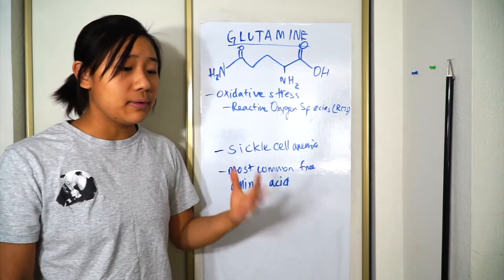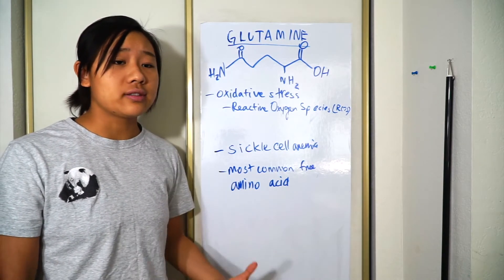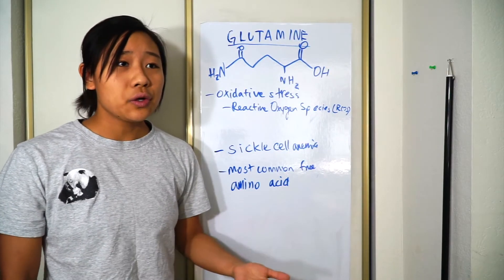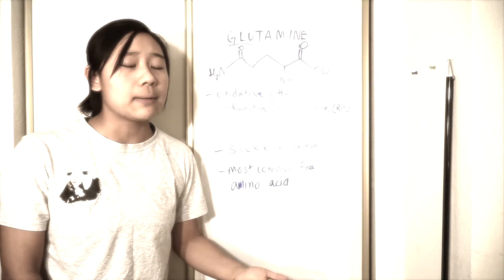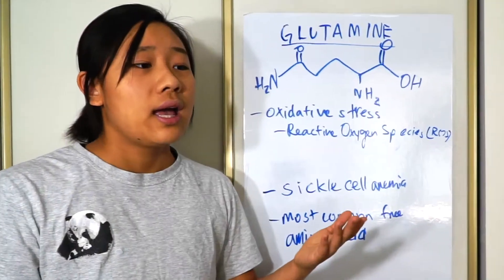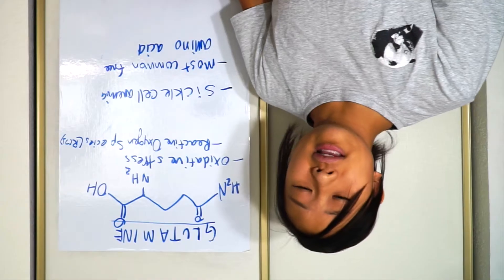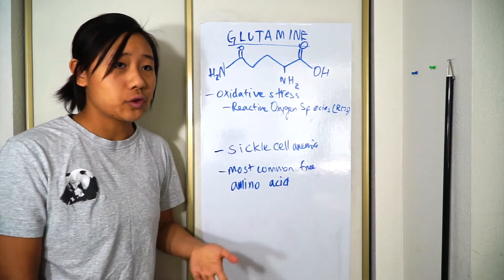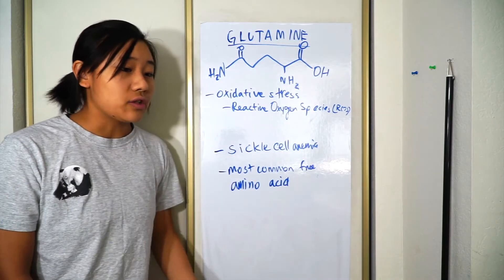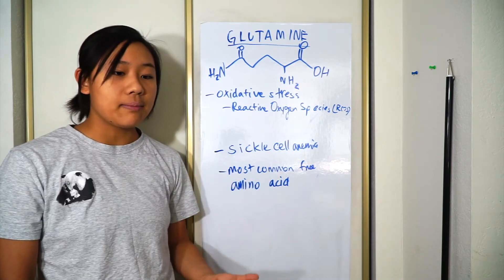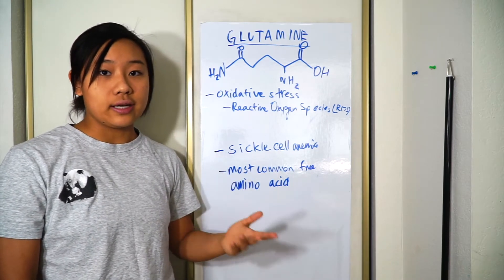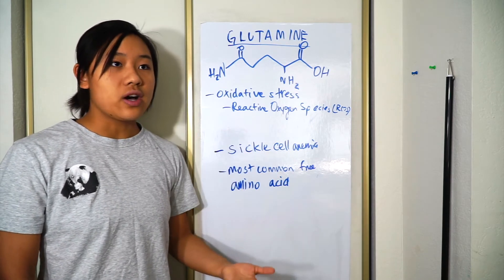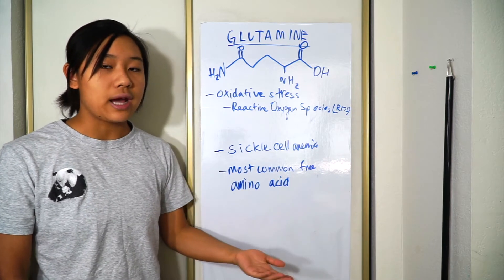How exactly the misfolded hemoglobin in sickle cell anemia causes this oxidative stress is complicated — the first Google result was an NCBI scientific article, suggesting the answer is still in progress of research. But misfolded protein in sickle cell anemia causes oxidative stress, and that's really bad. Glutamine can be taken up by the body and it increases the antioxidant capacity, which is good for sickle cell anemia patients, giving them more antioxidants to combat these reactive oxygen species.